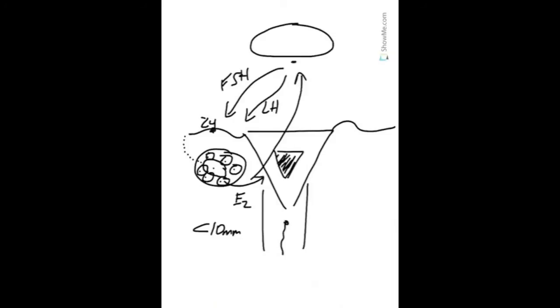If you have intercourse at the time of the LH surge, sperm will be waiting in the fallopian tube for the egg to arrive. If one of those sperm fertilizes the egg, an embryo is formed.